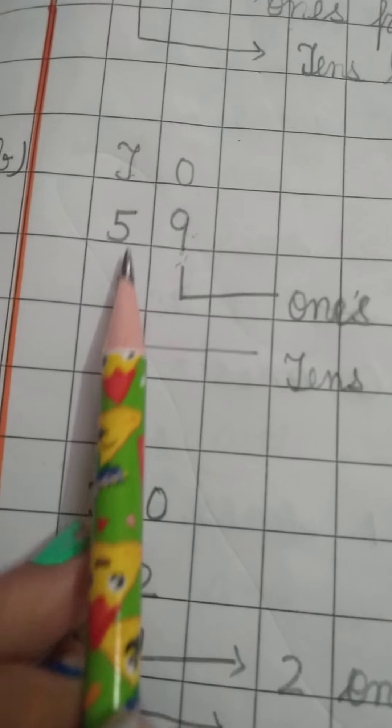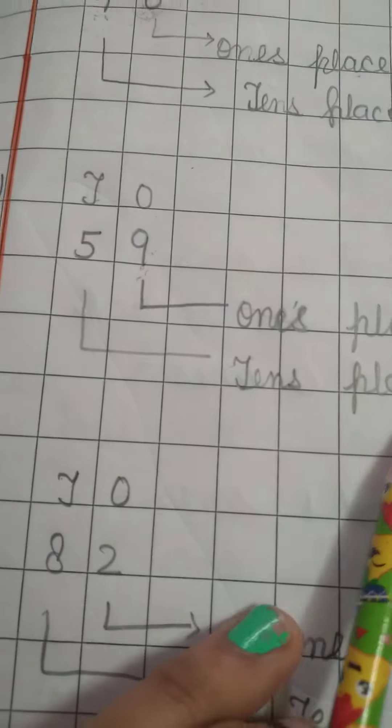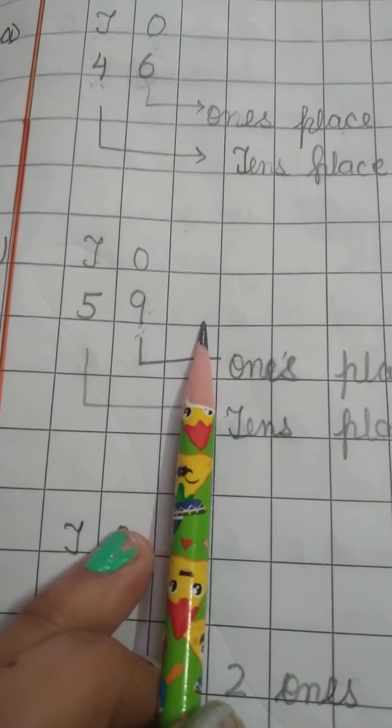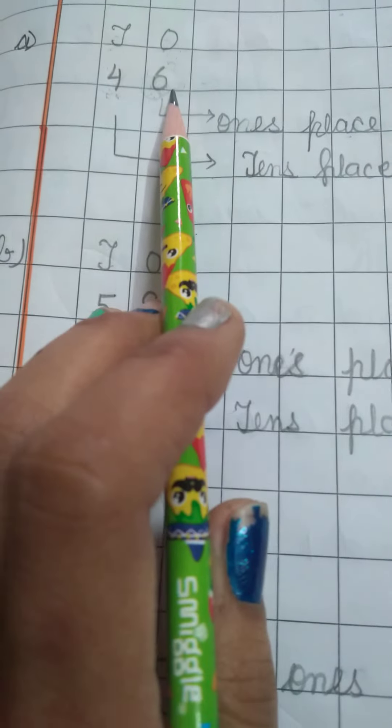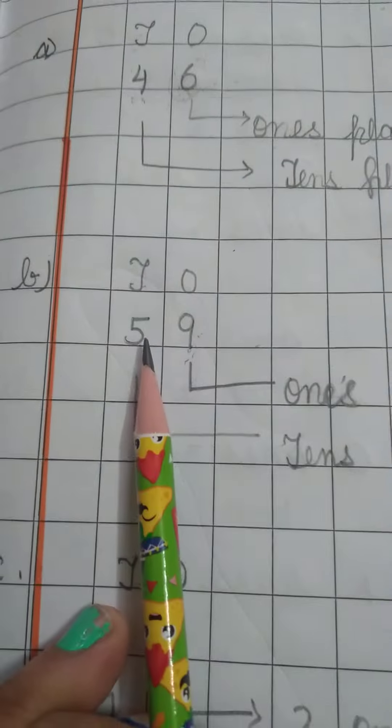Then you will write tens place. So in 46 and 59, the ones are 6 and 9, and the tens are 4 and 5.